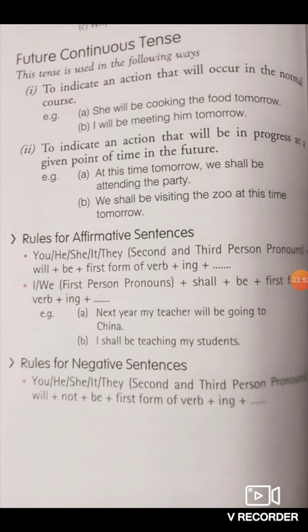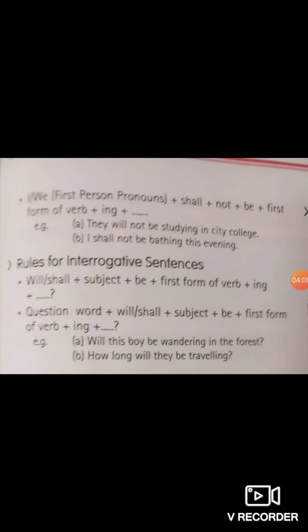For negative sentences, the rule for second and third person pronouns is: subject + will + not + be + first form of verb + ing. For first person pronouns: I/we + shall + not + be + first form of verb + ing. Example: 'They will not be studying in City College.' For interrogative sentences: will/shall + subject + be + first form of verb + ing + object. With question words: question word + will/shall + subject + be + verb + ing. Example: 'Will this boy be wandering in the forest?' 'How long will they be traveling?'